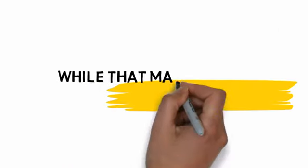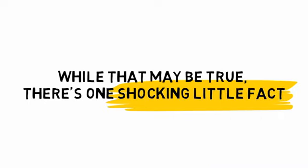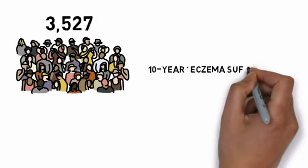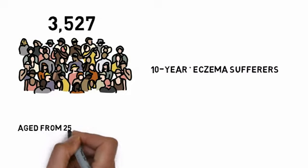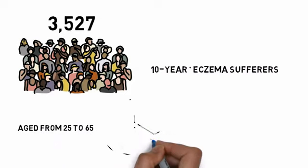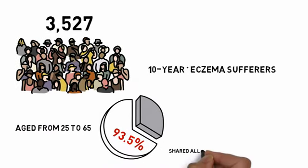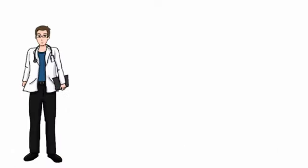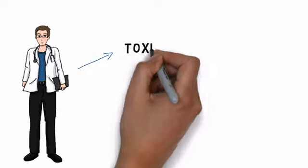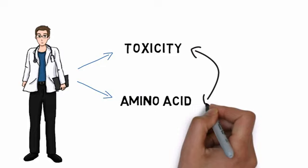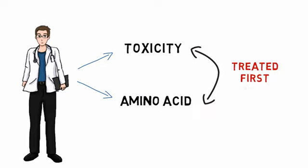And while that may be true, there's one shocking little fact you should know. Recently, a major medical institute conducted a scientific analysis on 3,527 10-year-plus eczema sufferers aged from 25 to 65. And in this study, a shocking discovery was made. 93.5% of the participants shared all three of the root causes of eczema. And what the doctors discovered was unless both toxicity and amino acid issues are treated first, the immune system will continue to overreact, resulting in nasty eczema outbreaks.